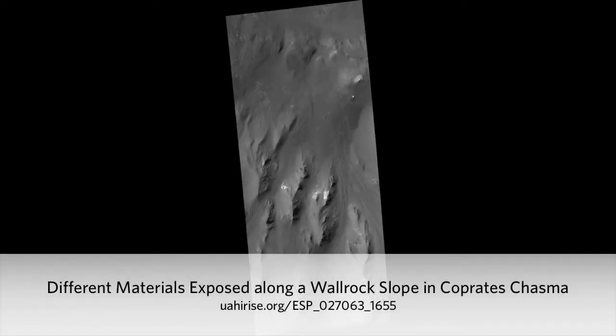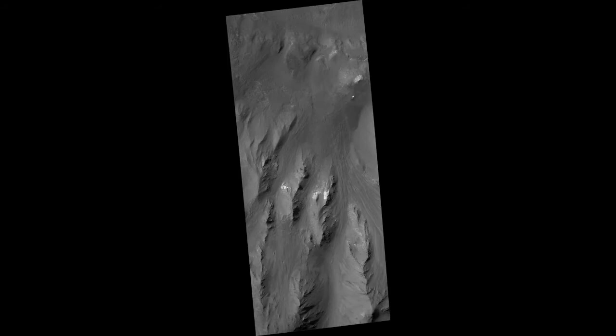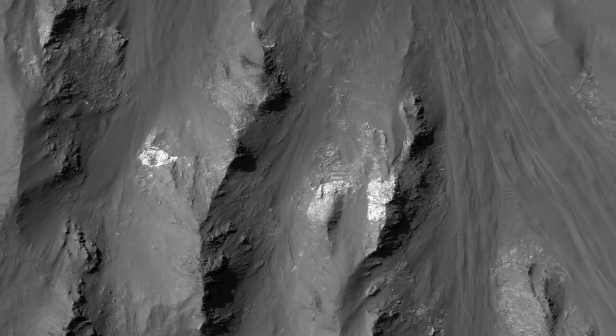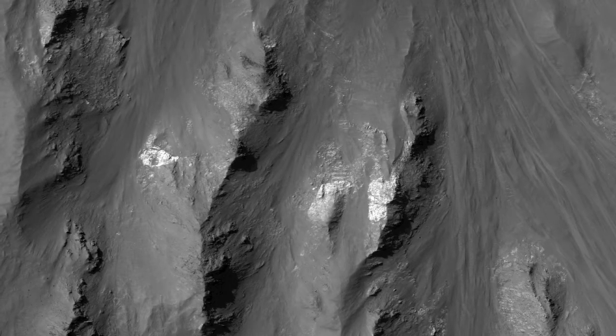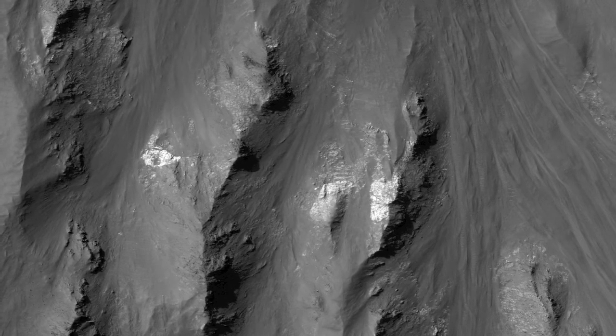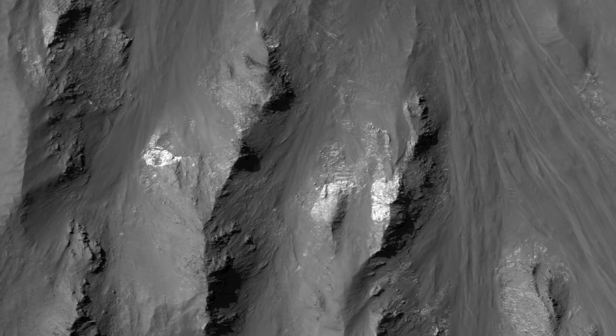Different materials are exposed along a wall rock slope in Copratis Chasma. This image shows several kilometers of topography exposed along the wall rock within Copratis Chasma.